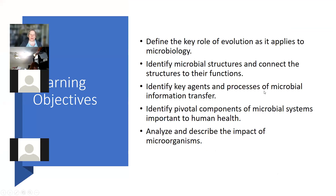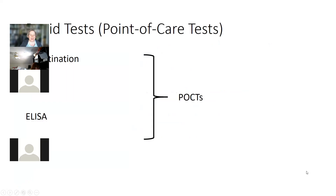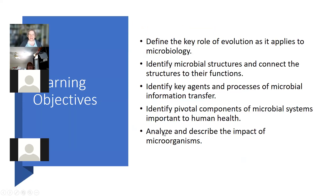This chapter helps us move toward the following learning objectives: defining the key role of evolution as it applies to microbiology; identifying microbial structures and connecting them to their functions; identifying key agents and processes of microbial information transfer; identifying pivotal components of microbial systems important to human health; and analyzing and describing the impact of microorganisms.